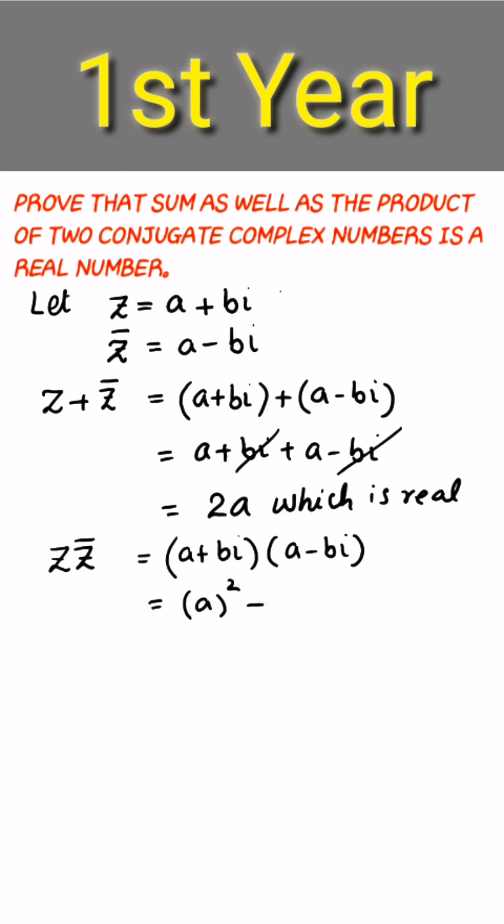a squared minus b iota squared, which equals a squared minus b squared iota squared. Since iota squared equals minus 1, it becomes a squared plus b squared, which is real.